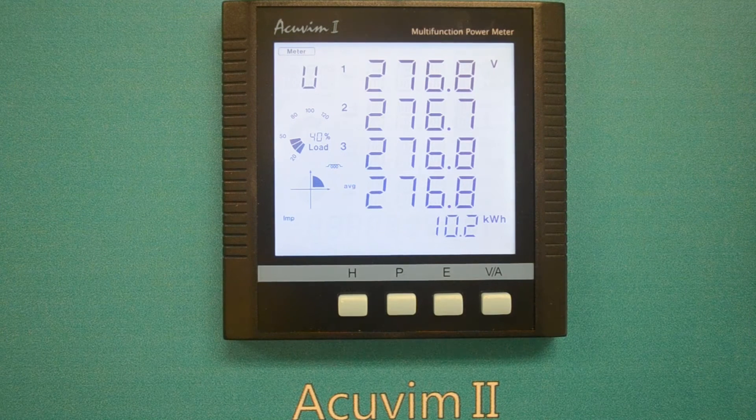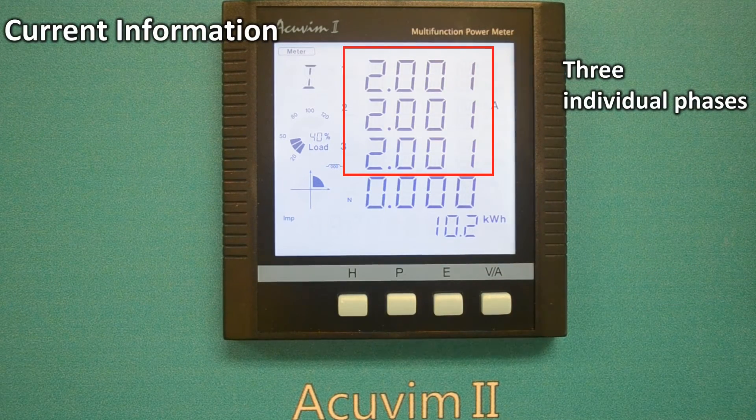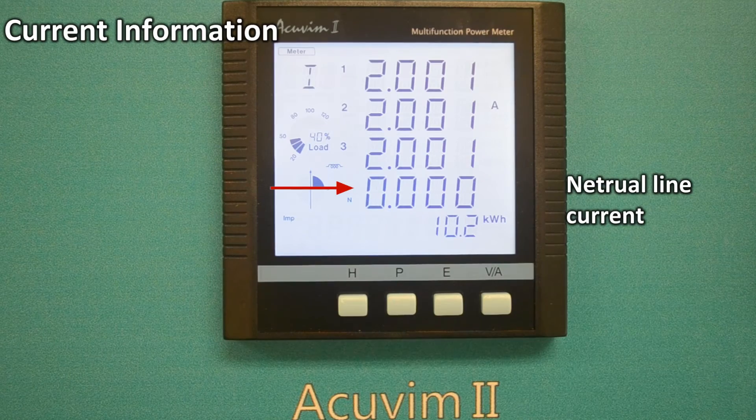By pressing the VA key repeatedly, you can see current information for all three individual phases as well as the neutral line current.